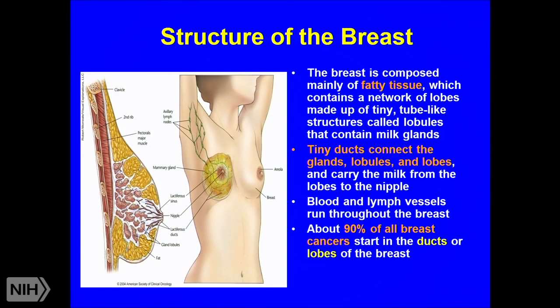The breast is composed mainly of fatty tissue, but within the fatty tissue there's an intricate network of lobules and ducts which carry milk to the nipple. It's within the lobules and the ducts that the majority of breast cancers arise. Within the fatty tissue you also have blood vessels and lymphatic vessels.